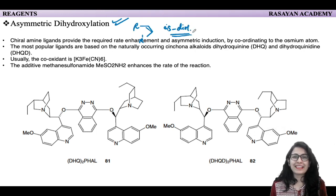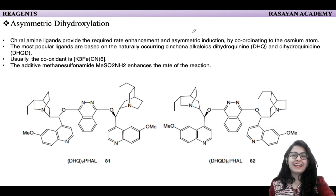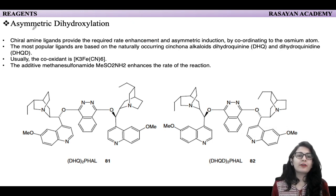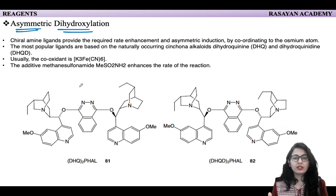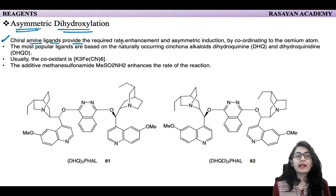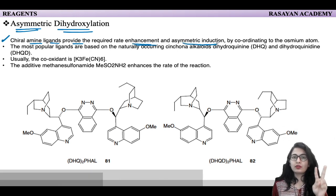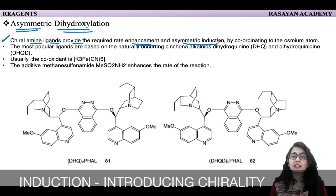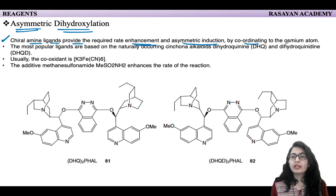Try drawing it yourself and check whether I'm correct. We'll talk about how we can get selectively one single enantiomer by doing asymmetric dihydroxylation. As you can see, there are two very big ligands. These chiral amine ligands provide the required rate enhancement and asymmetric induction by coordinating to the osmium atom.